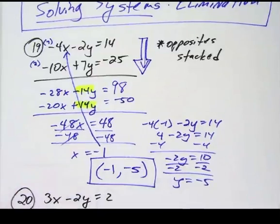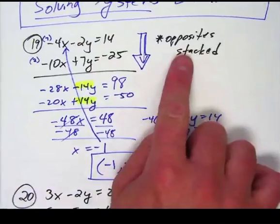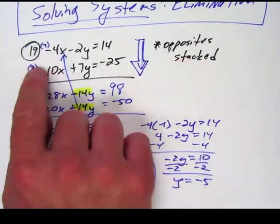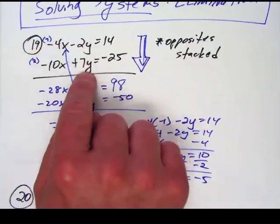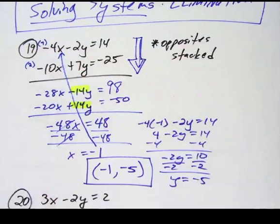Alright now that was kind of quick but I feel like if you understand the idea of getting opposites stacked you can pick the numbers you multiply by to make that happen. And then add going down and things will eliminate. You'll have one letter solved, plug it back in, get the other letter.